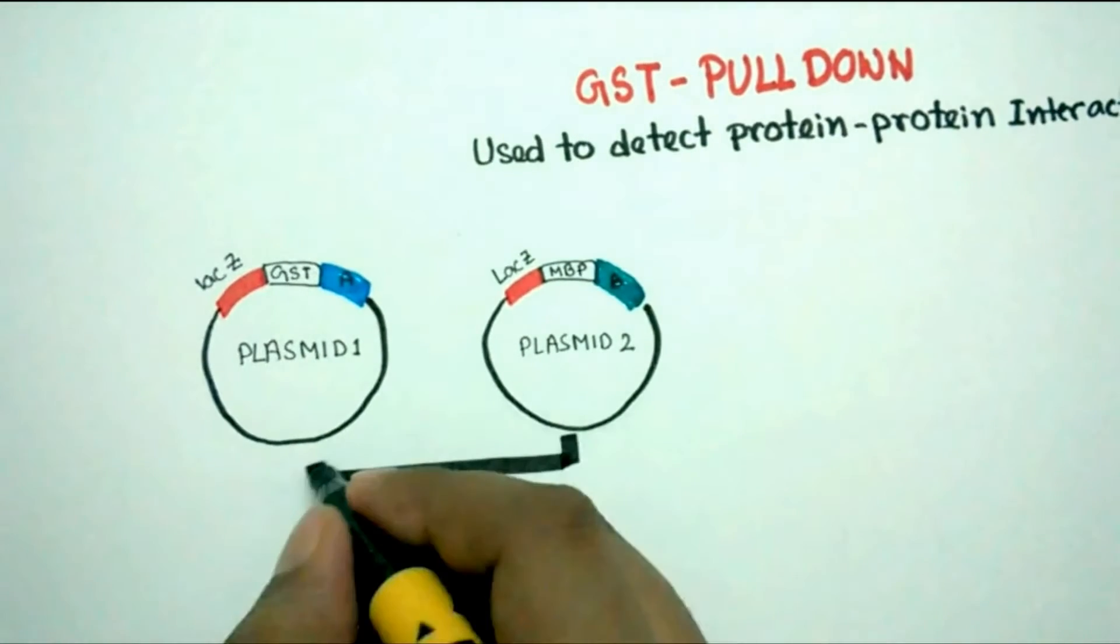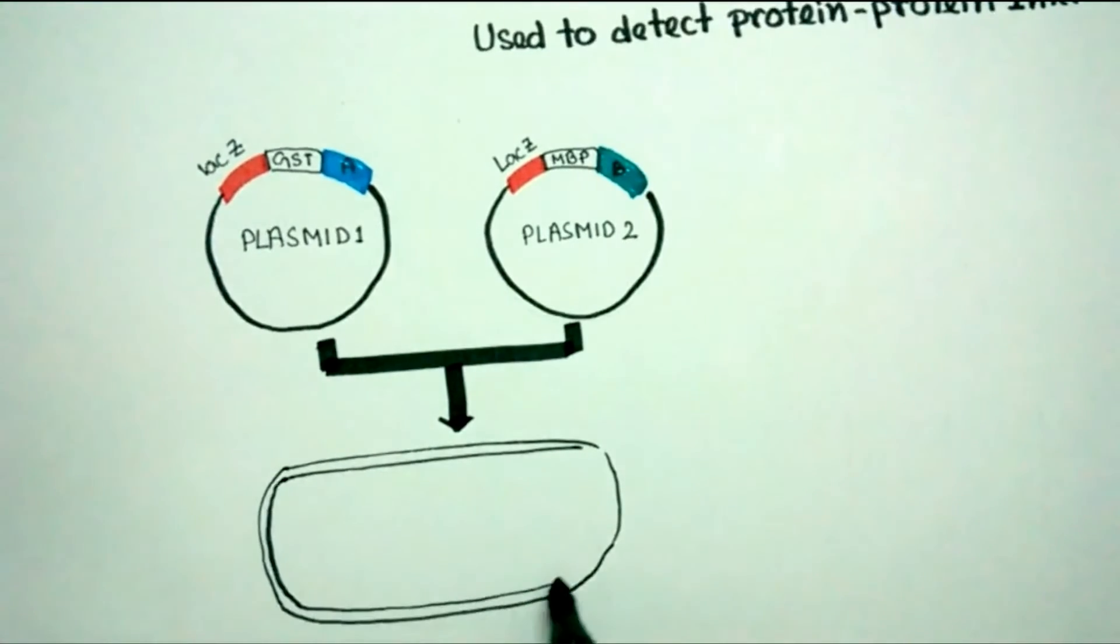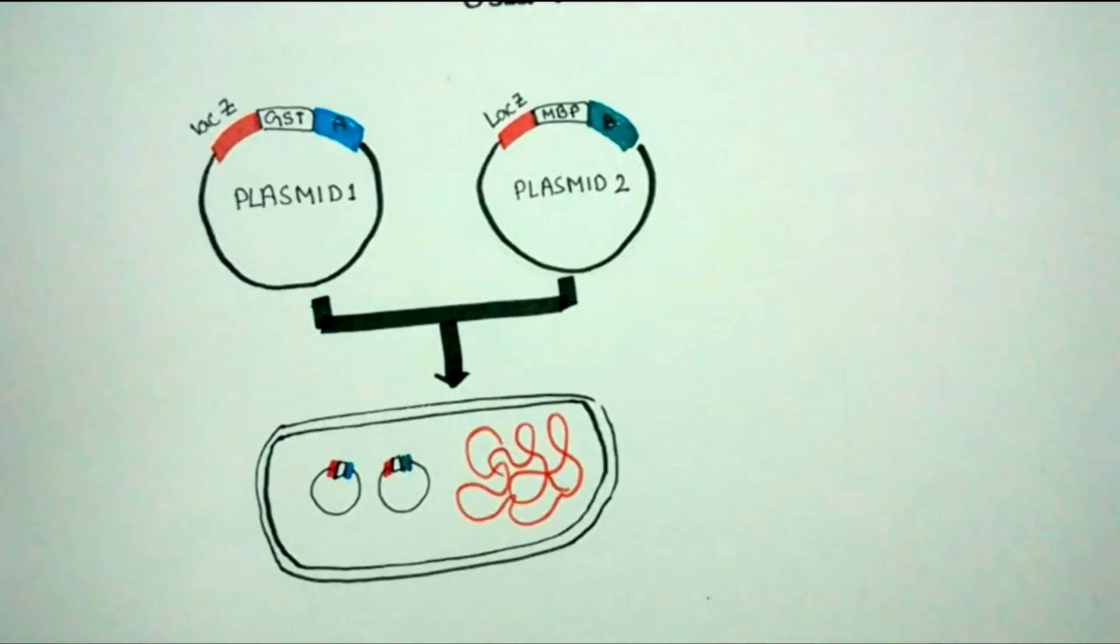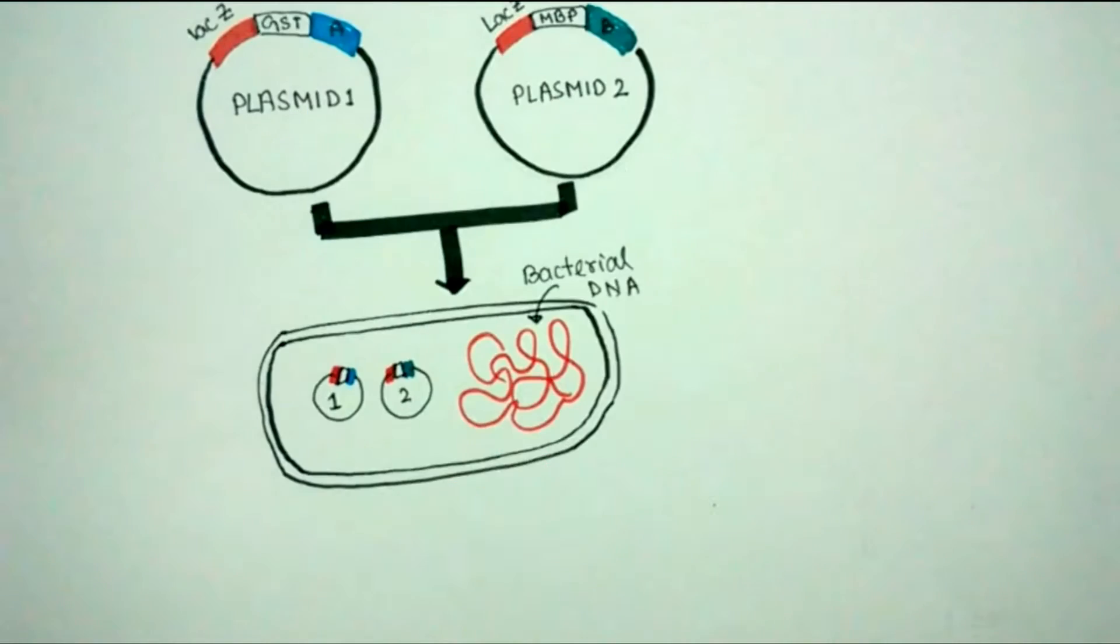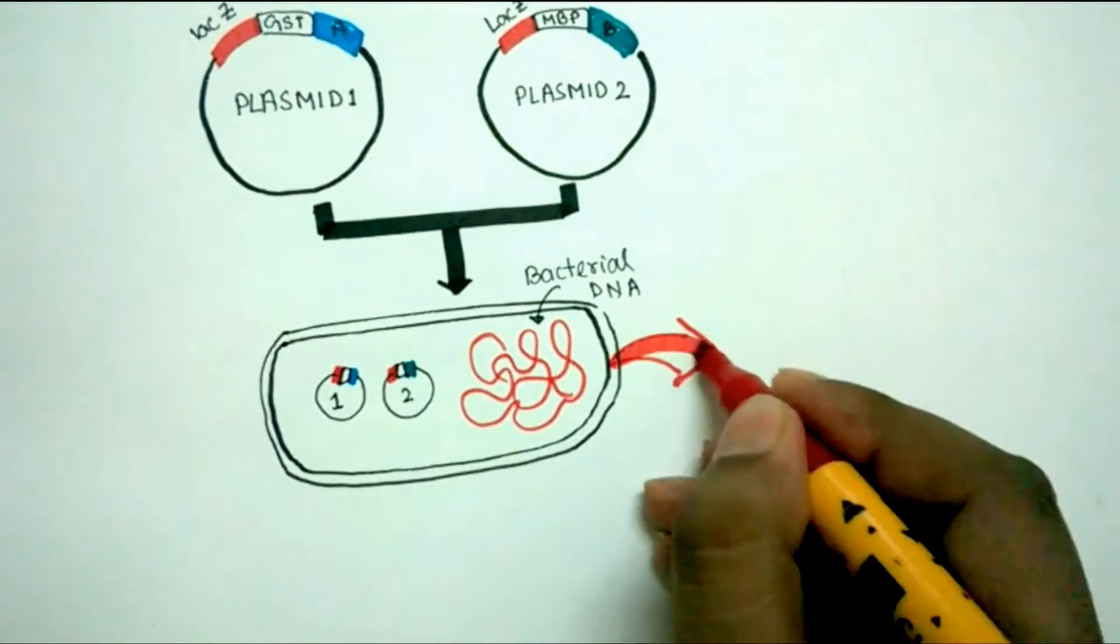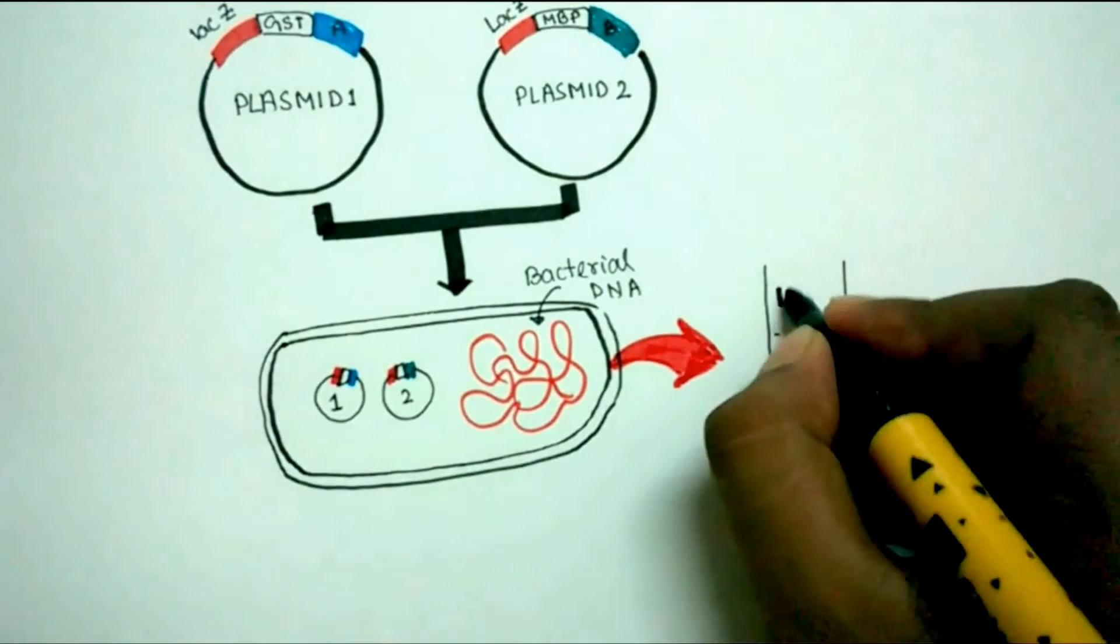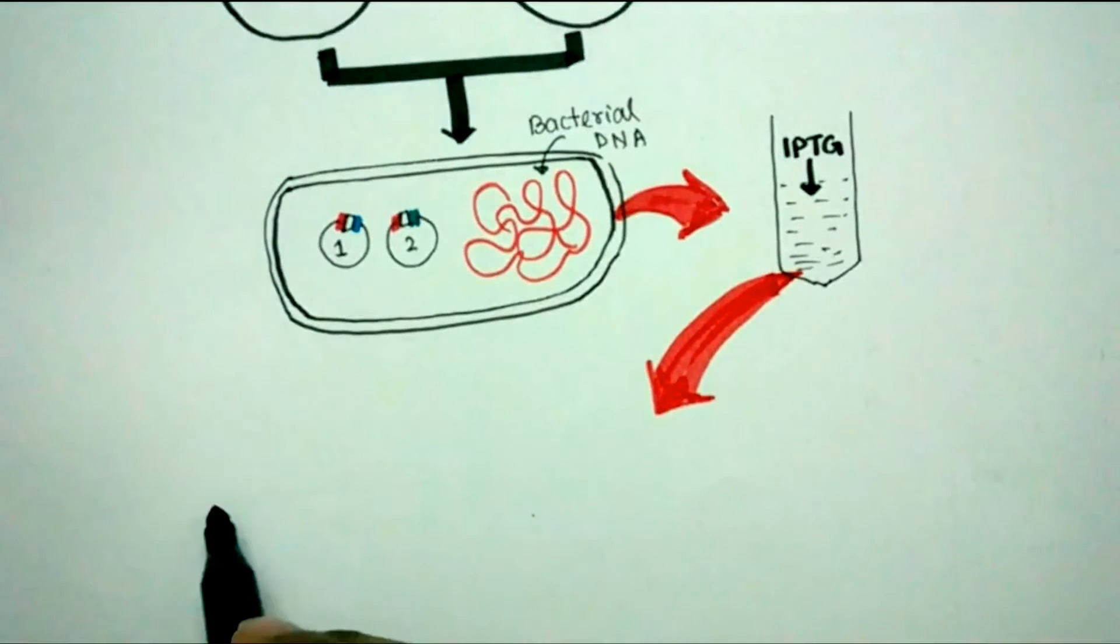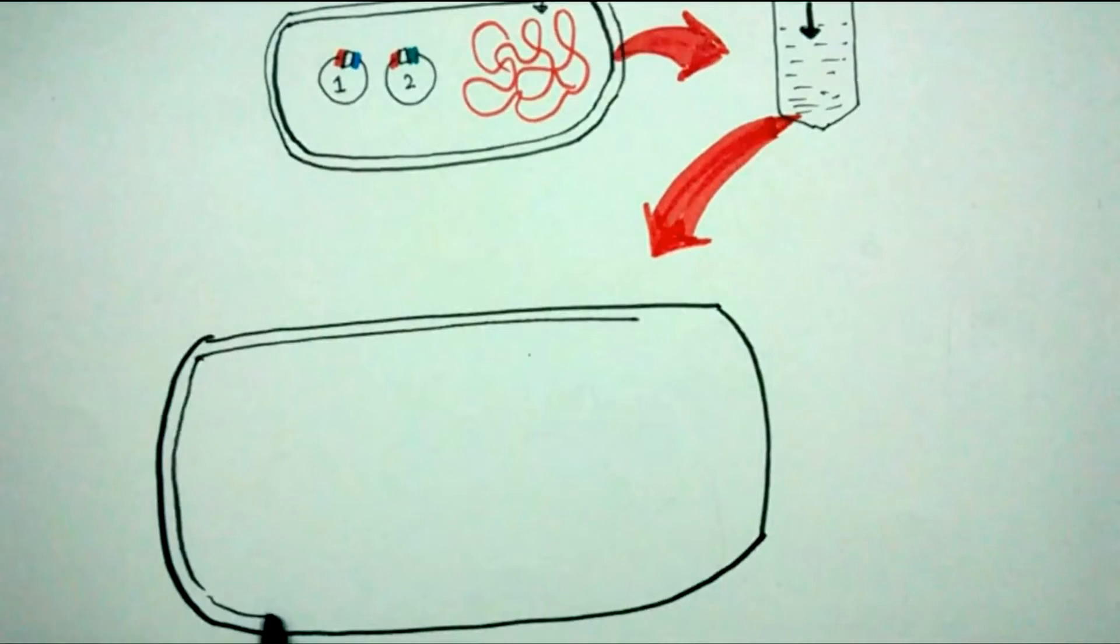Protein of interest A is tagged with GST, glutathione S transferase. We transform the bacteria with both expression vectors, and since both have the lac Z promoter, we can induce the expression of A and B with IPTG, isopropyl thio galactoside, which is a variant of allolactose and an inducer of lac operon.